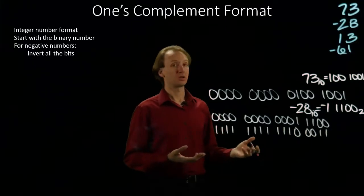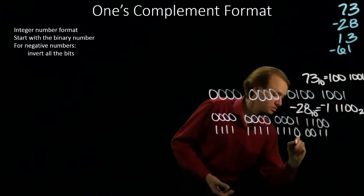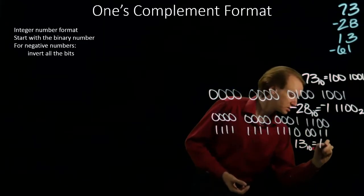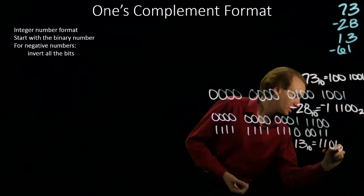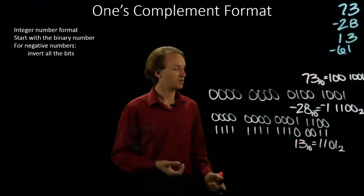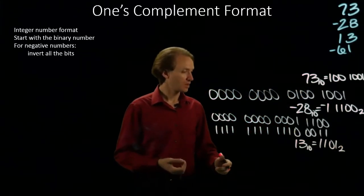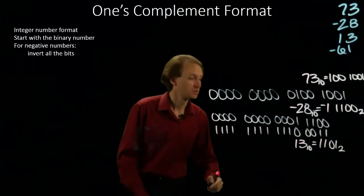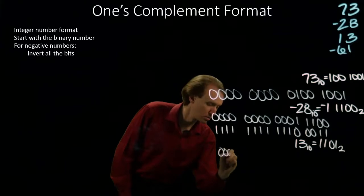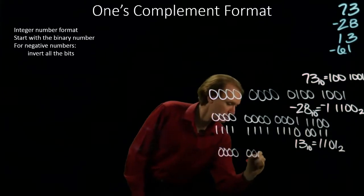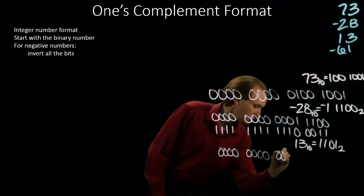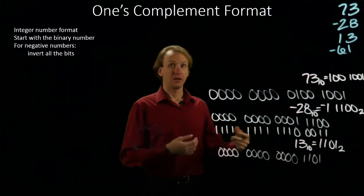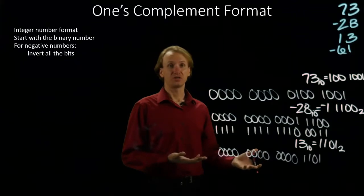Our next number is positive 13. And that is 8 plus 4 plus 1. So, there is our binary number. Again, this is a positive number. So, I'm just going to write down this number with 16 bits. And there's my one's complement representation of 13.